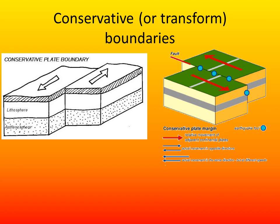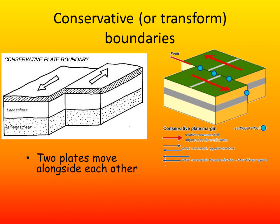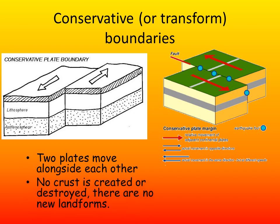Our final type of plate boundary is the conservative boundary, or transform boundary. At this type of boundary, the two plates move alongside each other — either in opposite directions, or in the same direction but at different speeds. No crust is created or destroyed, and there are no new landforms.